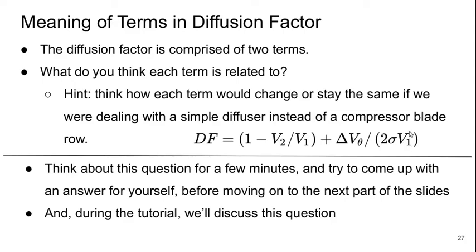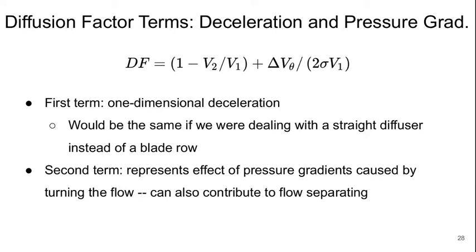Welcome to Part 5 of Lecture 16 of Aerospace Propulsion. We left off thinking about what the two different terms within the diffusion factor definition really mean. The first term is essentially a one-dimensional deceleration term. This would be the same if we were just dealing with a straight diffuser instead of a blade row. The second term has to do with the effect of pressure gradients caused by turning the flow. These can also contribute to the flow separating.